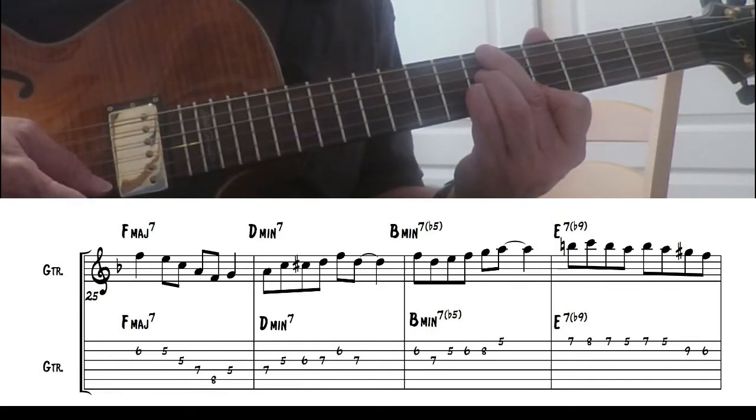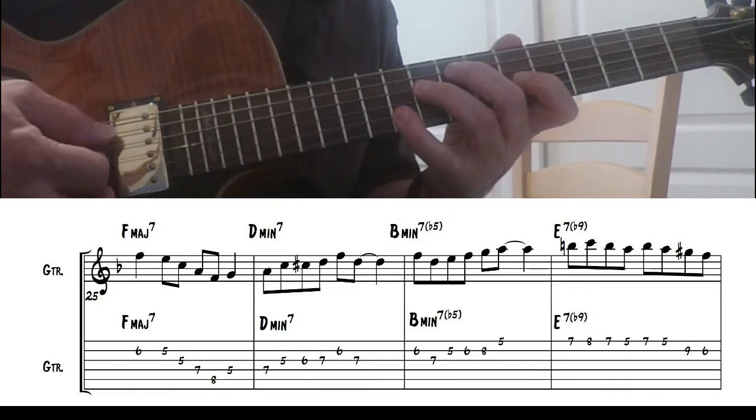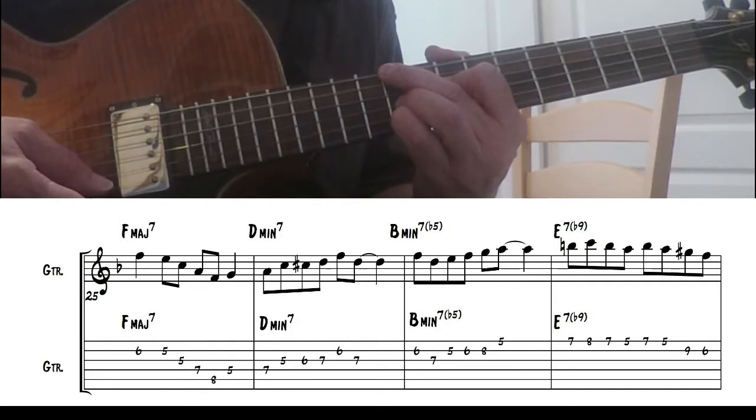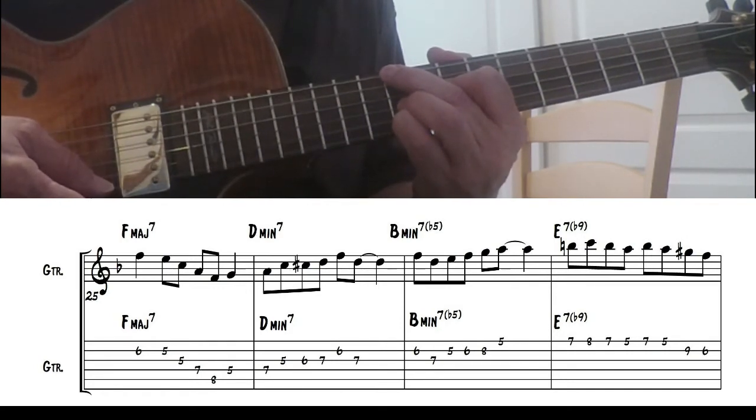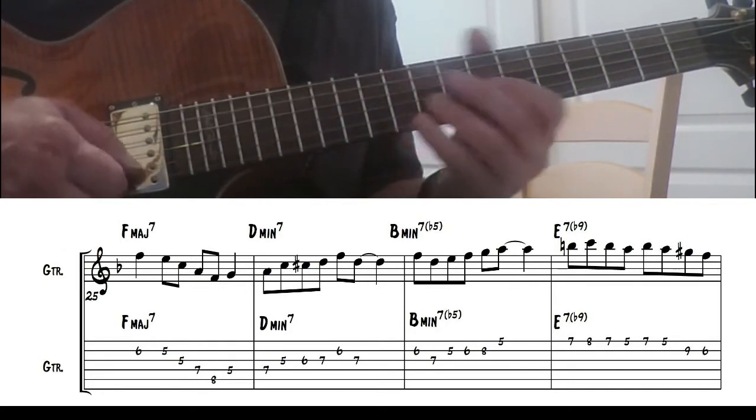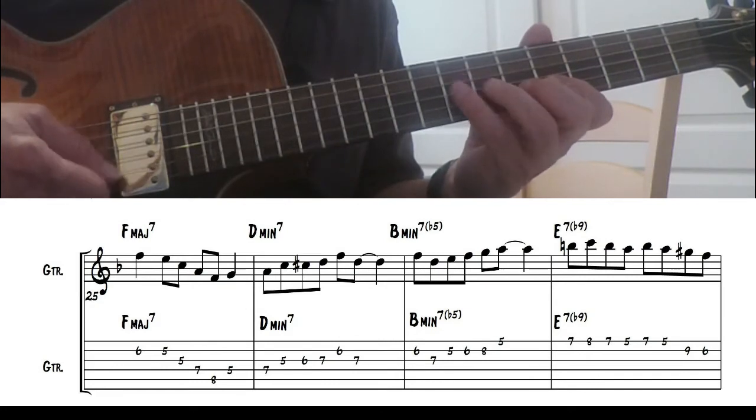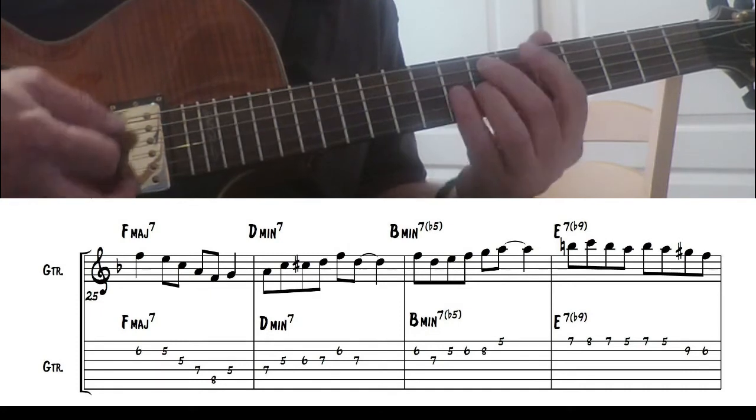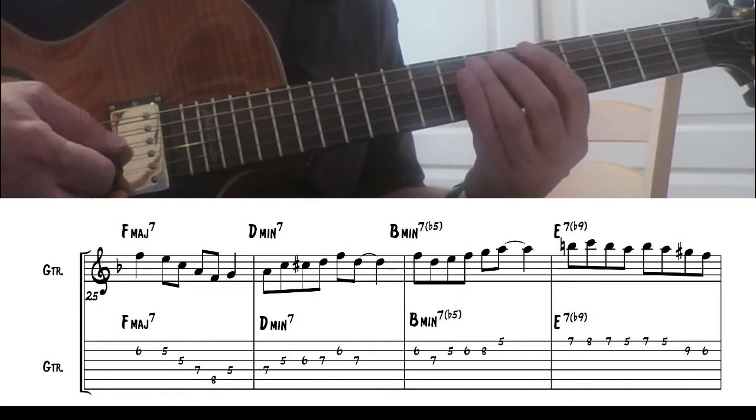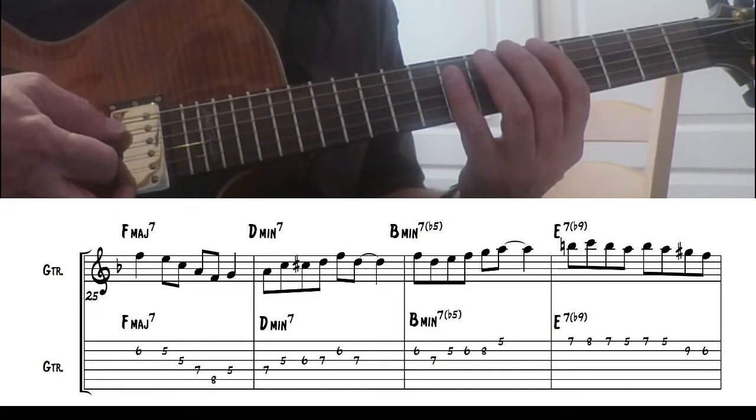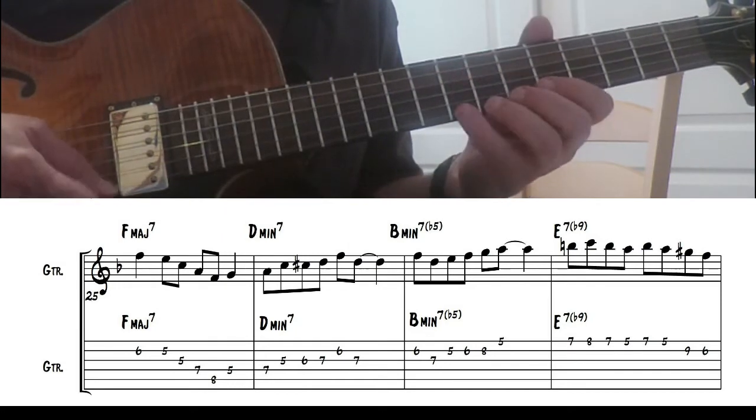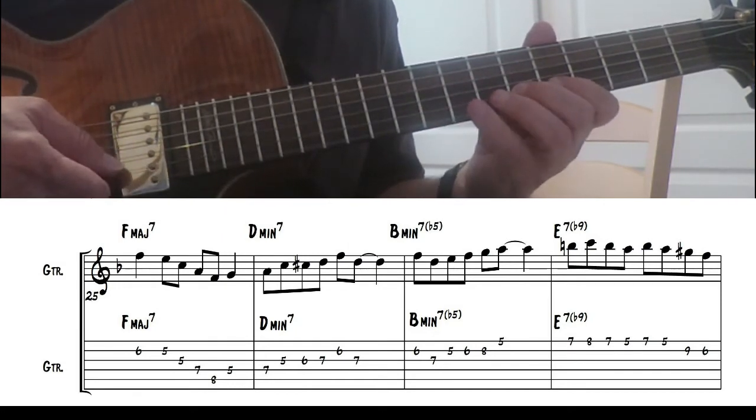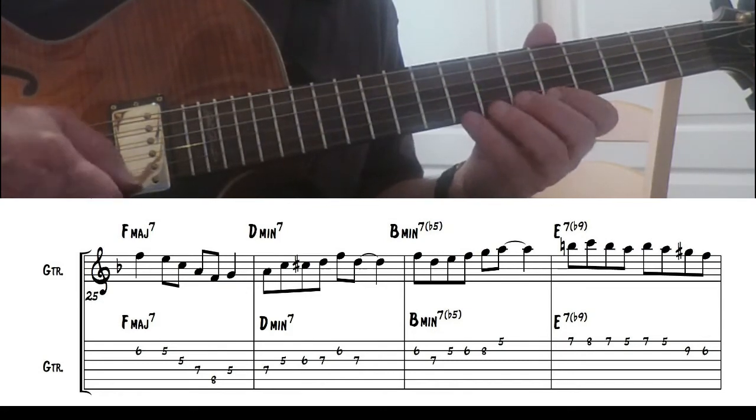Okay, Bm7b5. What I did was, since the Dm triad is inside that, I just used that kind of. Okay, then E7b9, you're going to use the 5th scale, the A harmonic minor starting on the 5th scale degree. Okay.